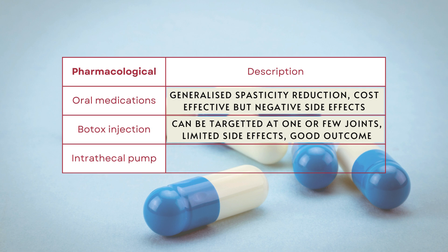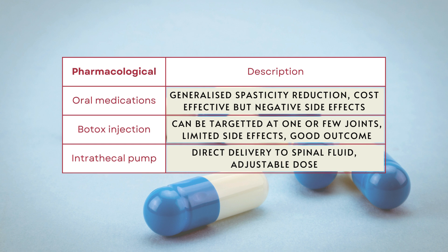Next, we have intrathecal Baclofen therapy, or the pump. This involves inserting a pump and catheter into the spinal fluid area, where it delivers Baclofen directly, reducing spasticity. The dose can be adjusted, and it is better than oral medications in that less medication is required — because with oral medications, much of the dose is metabolized in the body. Since intrathecal Baclofen is delivered directly, greater effects are achieved with lesser doses. However, this does involve a surgery.